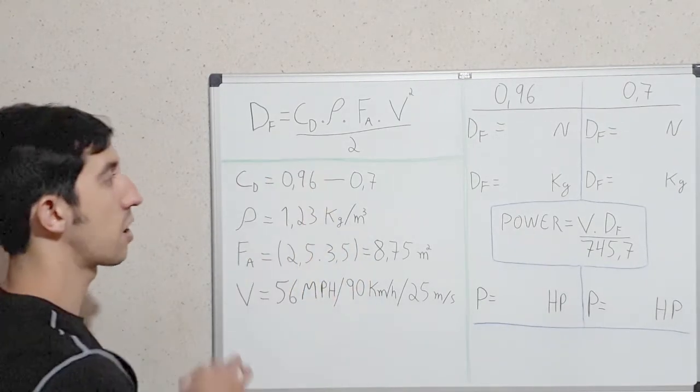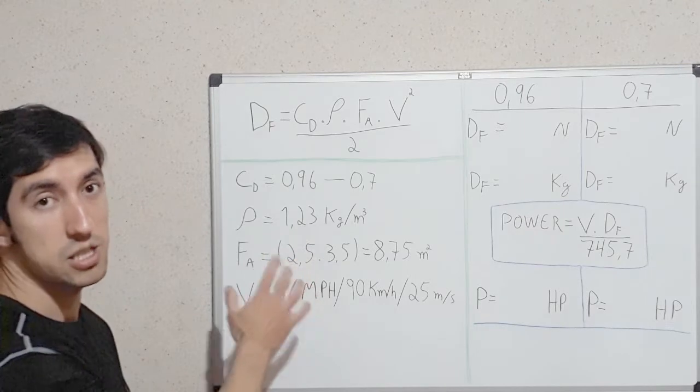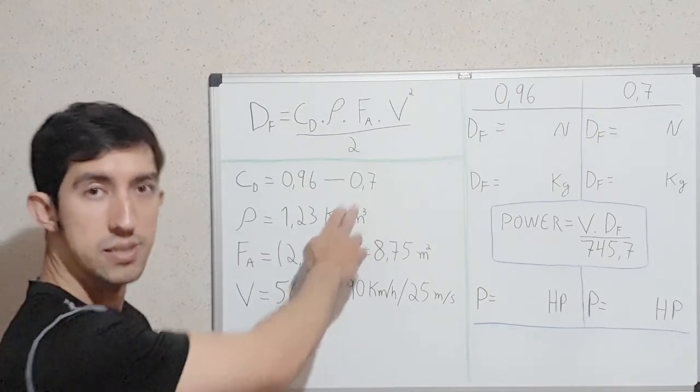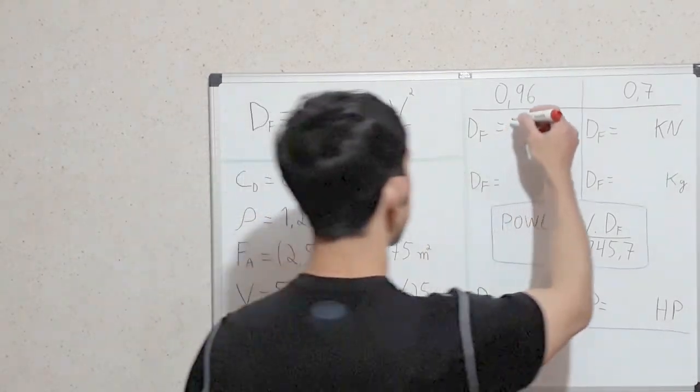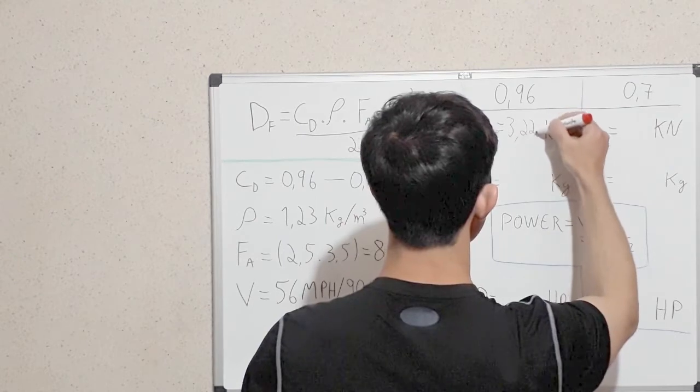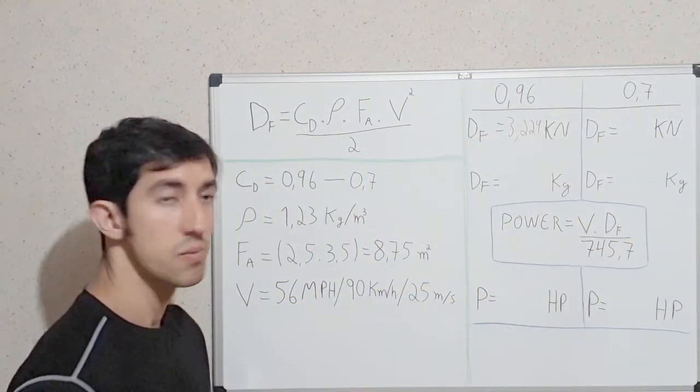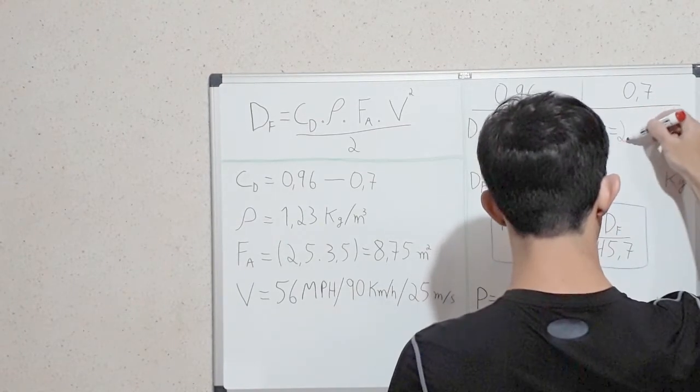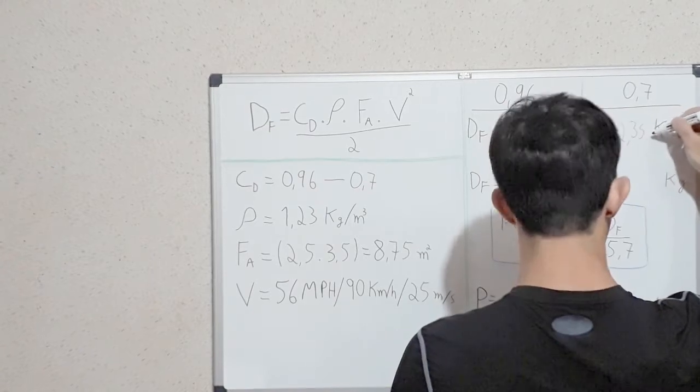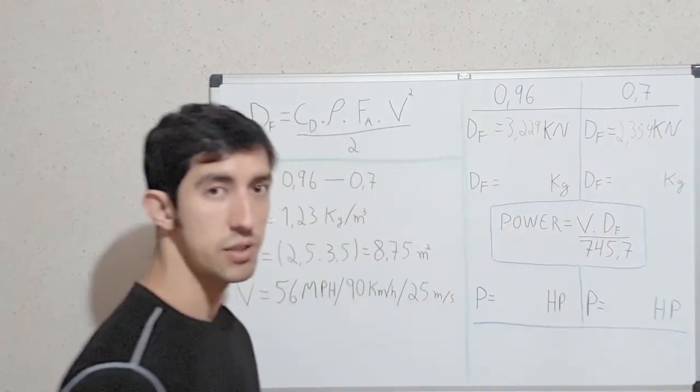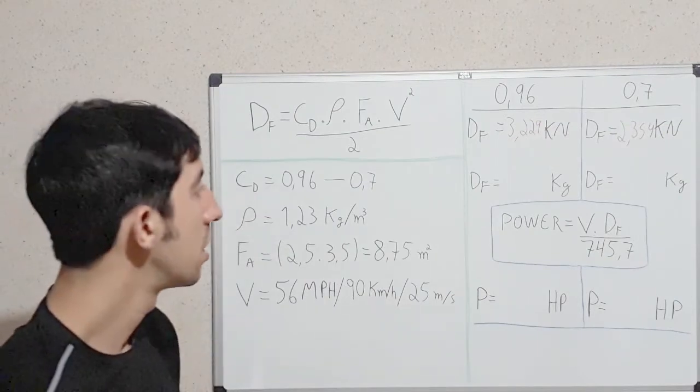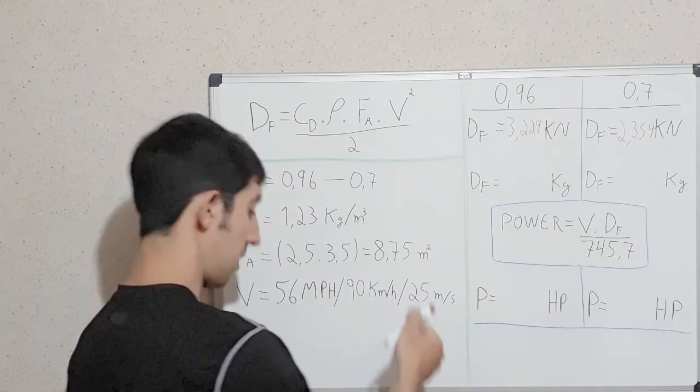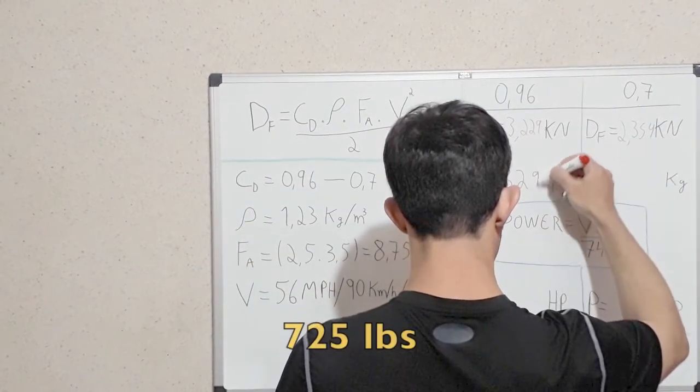Putting all these numbers in this formula, the only thing that changes is the fairing. With no fairing, 0.96 and with the fairing, 0.7. So with no fairing, the drag force is 3.229 kilonewton. If we put the fairing, the drag force will be 2.354 kilonewton. To convert that in a more common unit, you divide by the gravity, 9.81, and we have the drag force of 329 kilograms with no fairing.